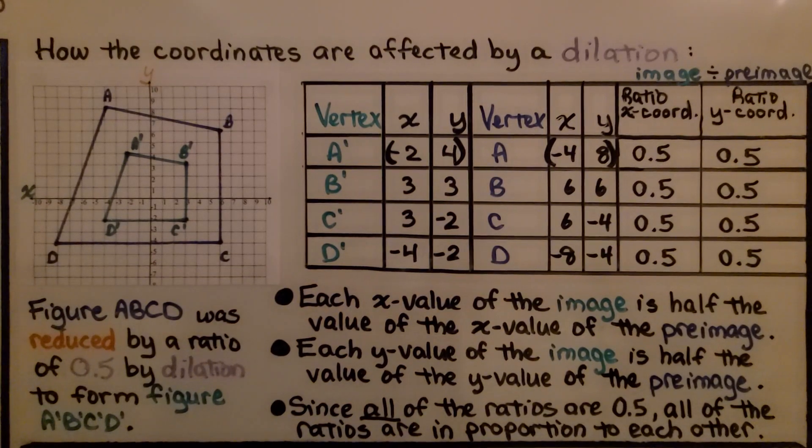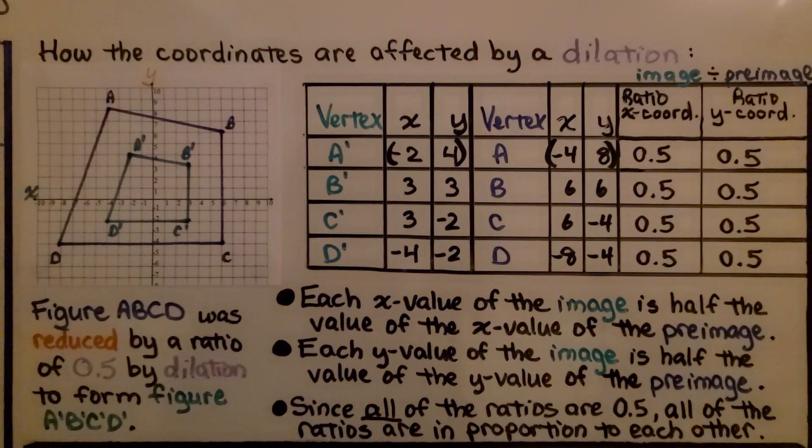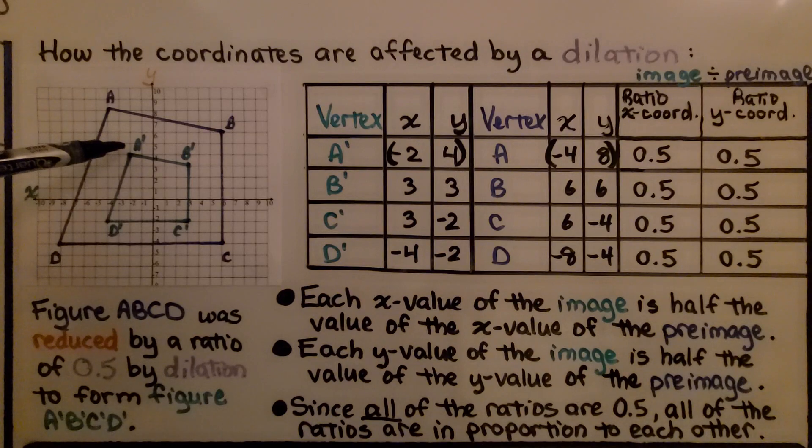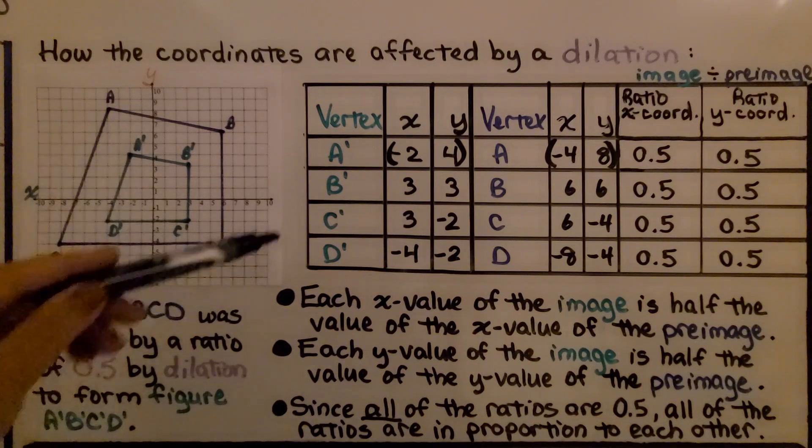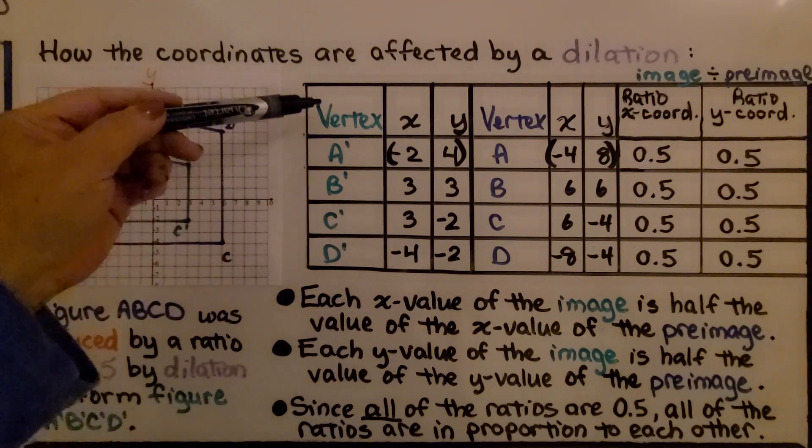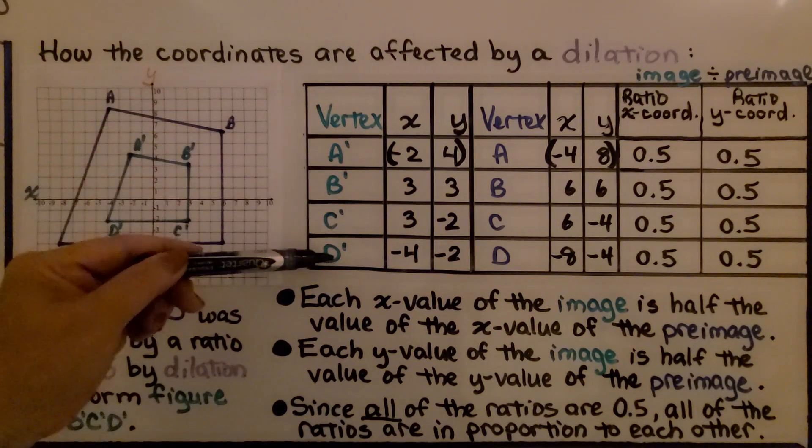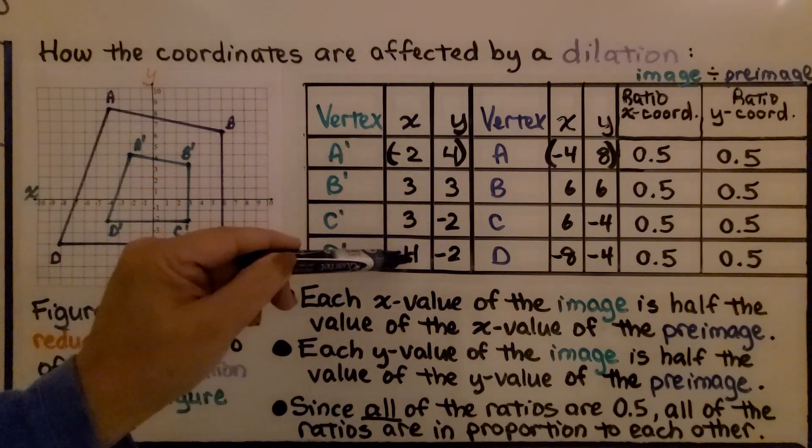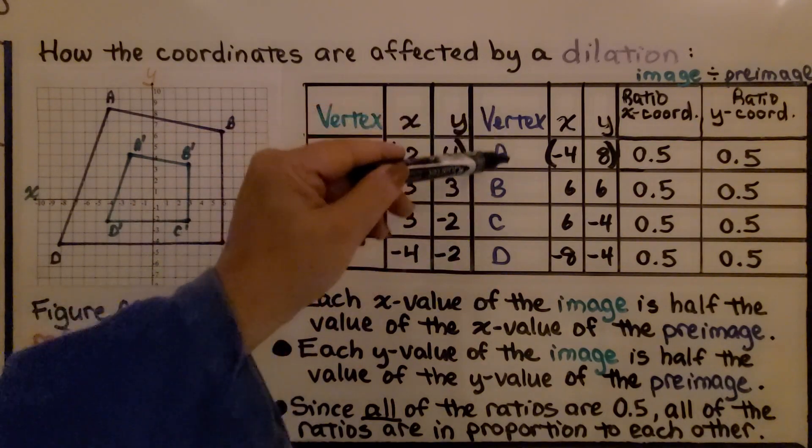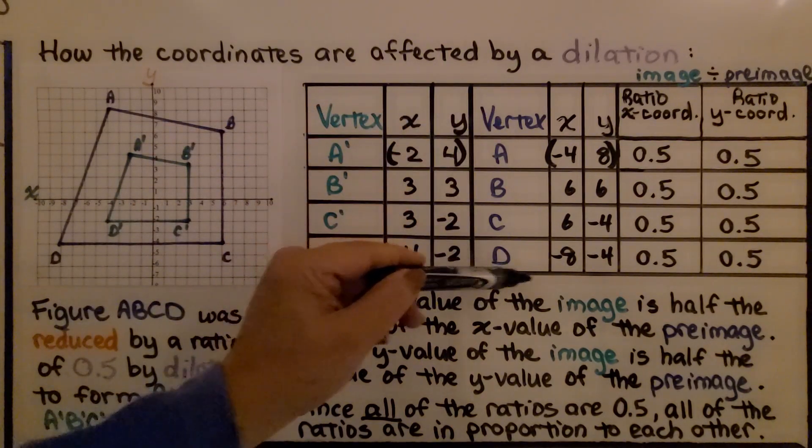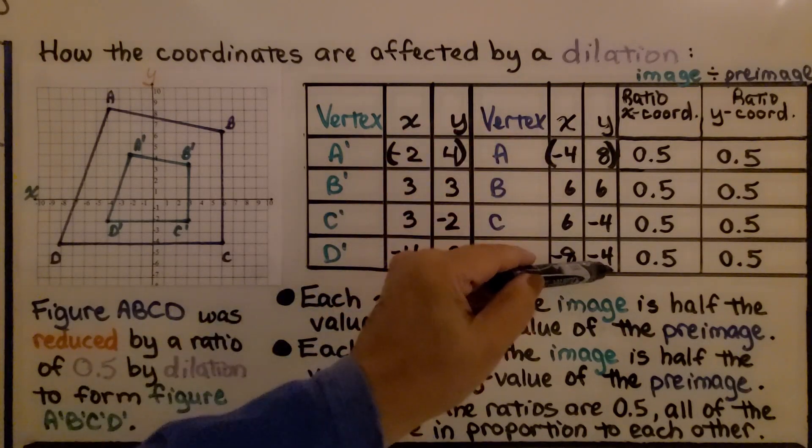So this is how the coordinates are affected by a dilation. We have a quadrilateral ABCD and we have its image A'B'C'D'. We have a table where we have listed the vertices for A'B'C'D', all of the x values, all of the y values, then the vertices for ABCD and its x values and y values.